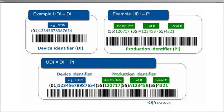A UDI is created by bringing together two parts: the device identifier in blue and the production identifier in green. It is important to remember that a UDI will require both of the above pieces. These can be concatenated into one long barcode, or be split over two smaller barcodes.